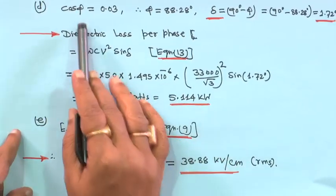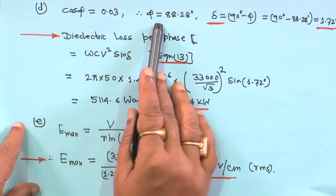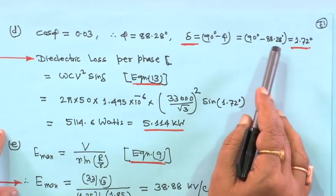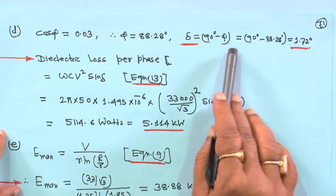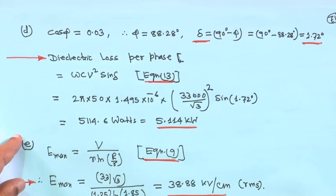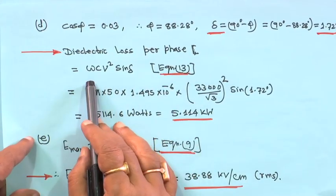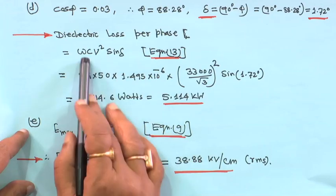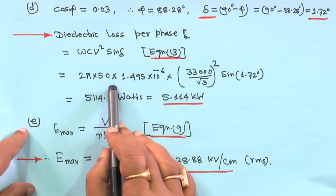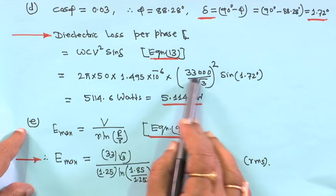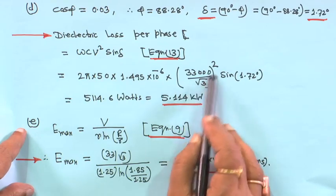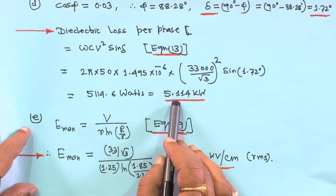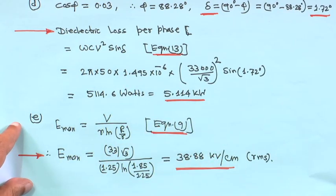For dielectric loss: power factor cos φ = 0.03 gives φ = 88.28°, so loss angle δ = 90° − 88.28° = 1.72°. Dielectric loss per phase = ω·C·V²·sin δ = 2π × 50 × 1.495×10⁻⁶ × (33,000/√3)² × sin(1.72°) = 5114.6 W = 5.114 kW per phase.